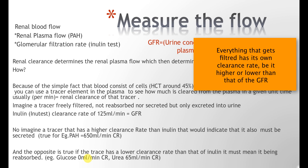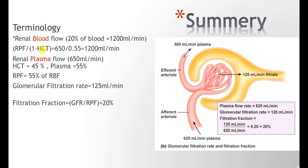The renal blood flow is approximately 20% of cardiac output, equating to about 1.2 liters per minute. We get this by taking the renal plasma flow and dividing by one minus the hematocrit value: 650 divided by 0.55, which gives approximately 1.2 liters per minute. The renal plasma flow — the amount of plasma reaching the renal corpuscle — was approximately 650 mL/min. Again, these are approximations and should be taken with a grain of salt.